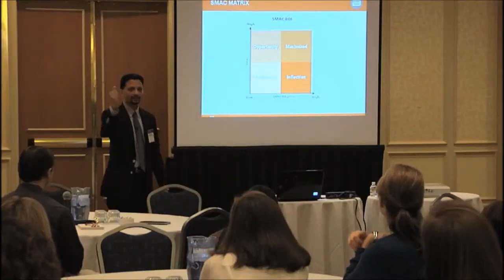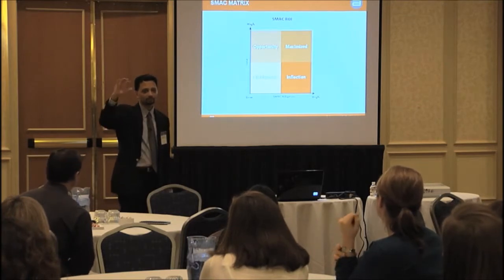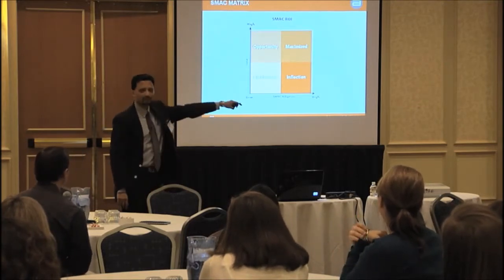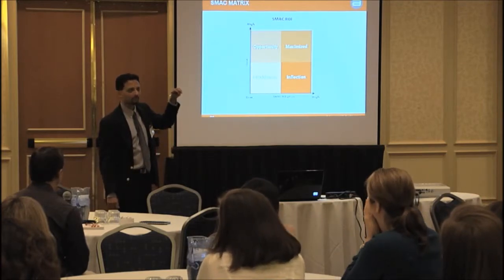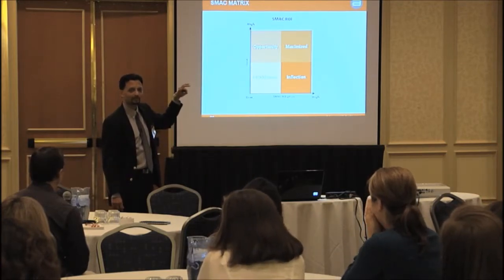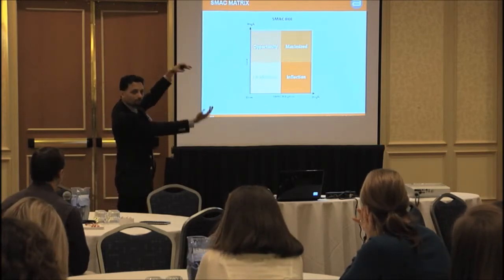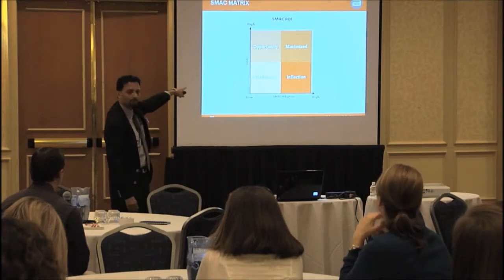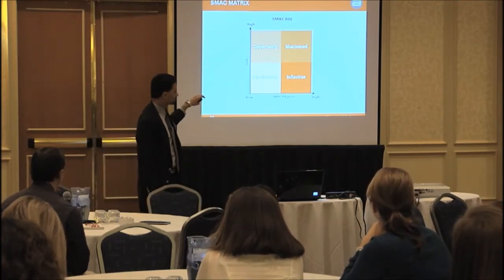Take Netflix as an example. Has Netflix adopted the SMACK stack? Yes — they're on the high side. How much value is Netflix generating from that adoption? A lot. So high value, high adoption — they're in the maximized quadrant.